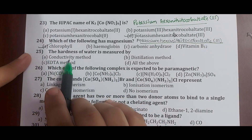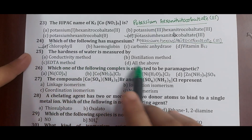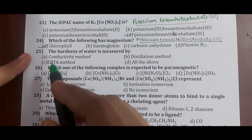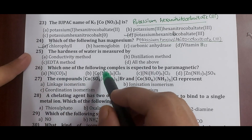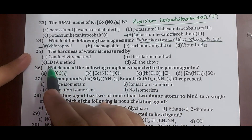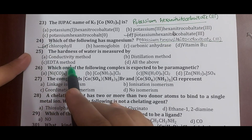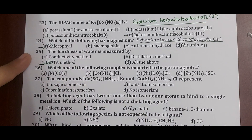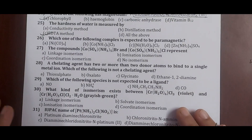Question 25: the hardness of water is measured by which method? Options are conductivity method, dissolution method, EDTA method, and all of the above. Hardness of water is measured by forming a complex of calcium and magnesium ions with EDTA. Correct answer: EDTA method.